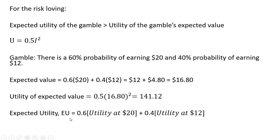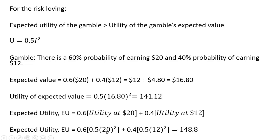The expected utility of the gamble is calculated as follows: EU = 0.6 times utility at $20, plus 0.4 times utility at $12. We plug $20 into the utility function and multiply by 0.6, then plug $12 into the utility function and multiply by 0.4. We get an answer of 148.8. Notice that the expected utility of 148.8 exceeds the utility of the expected value of 141.12 — that will be the case for risk-loving or risk-seeking individuals.